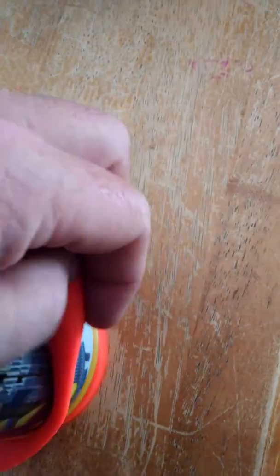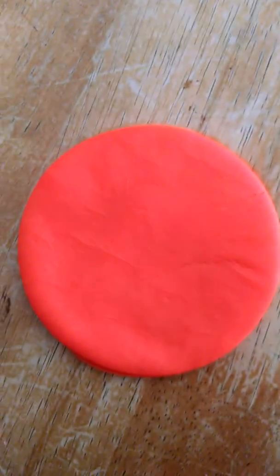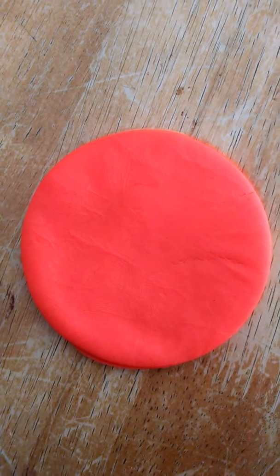A circle, 8.5 centimeters in diameter. A cake, 8.5 centimeters in diameter.